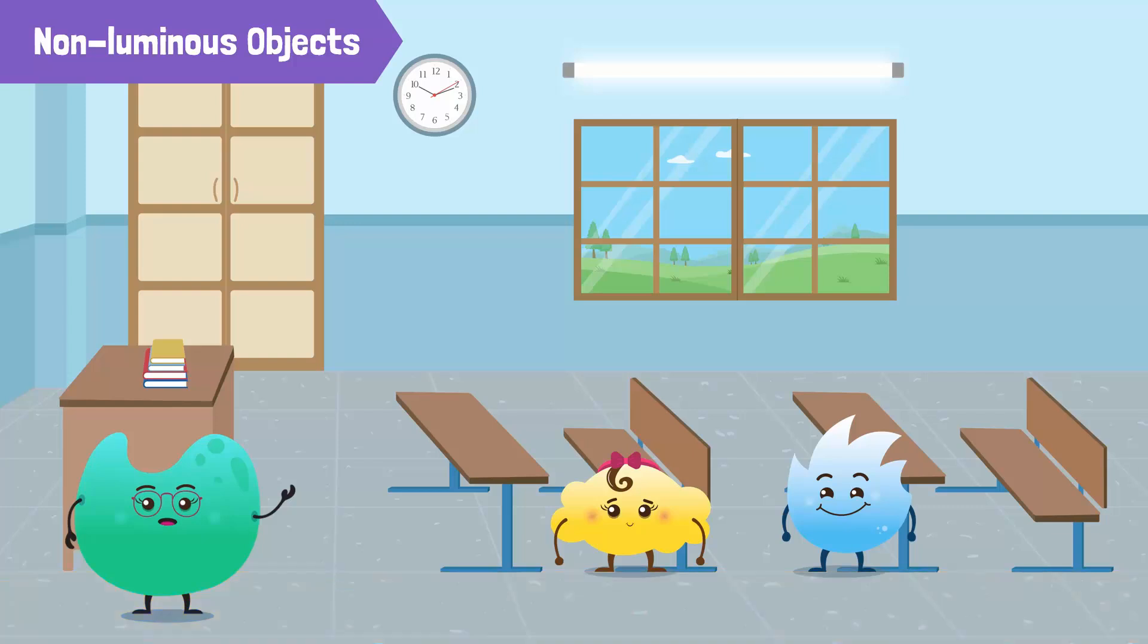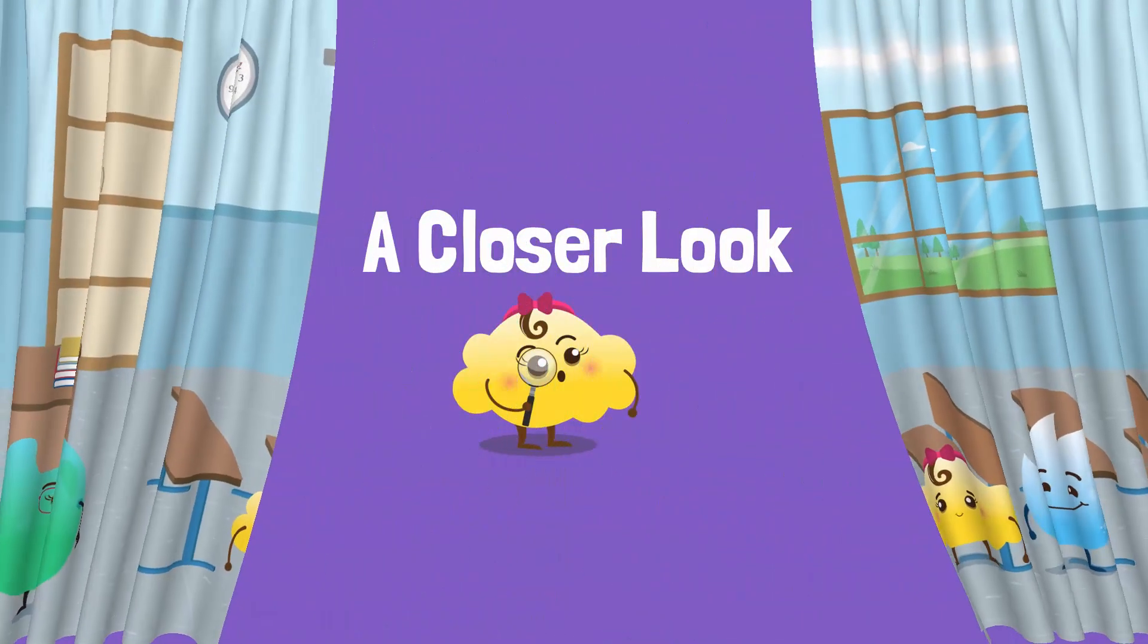We are able to see non-luminous objects around us because of light. We cannot see anything when there is no light. So what happens to these different types of non-luminous objects when light falls onto them? Let's have a closer look.